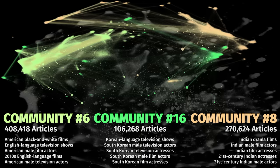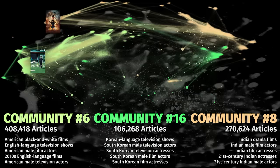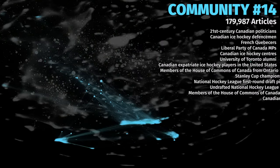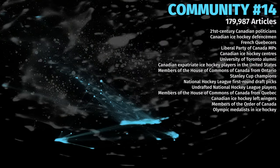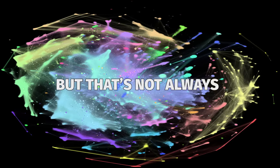I thought it would be interesting to look at films like Parasite and RRR, which come from Korea and India respectively but found massive success in America as well. These movies were more closely linked to American cinema than most other foreign films. Moving on, one of my favorite communities is community number 14. The top categories here are pretty evenly split between Canadian people and hockey, which just shows how closely linked hockey and Canada are to each other. In these cases it's easy to understand the groupings, but that's not always the case.